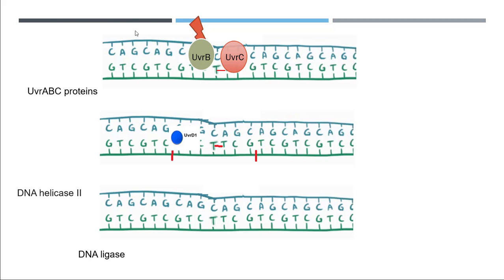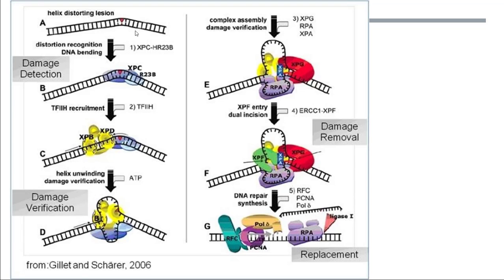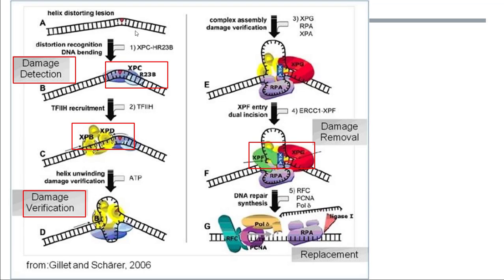That was the story for prokaryotes. In eukaryotes the process is the same, only the names of the proteins are different. First, the damage from UV light is detected by a protein called XPC. XPC detects the problem and calls other proteins — XPB and XPD — to confirm the damage. Once confirmed, the two strands come apart, and proteins XPF and XPG remove the wrong DNA from that strand. Then repair polymerases attach the new nucleotide strand, and DNA ligase joins everything together.